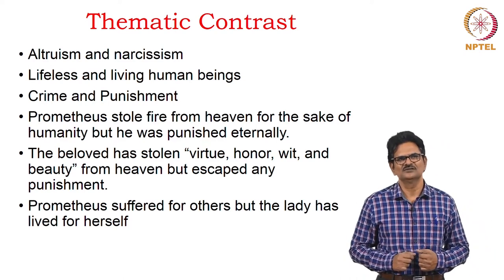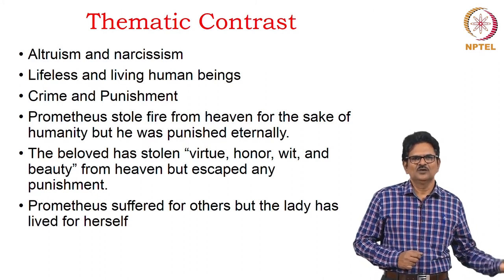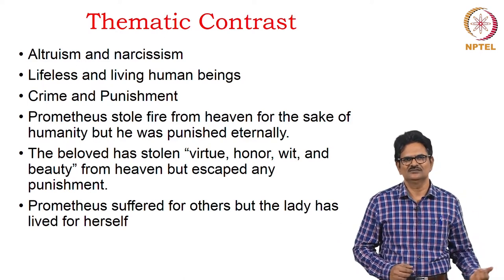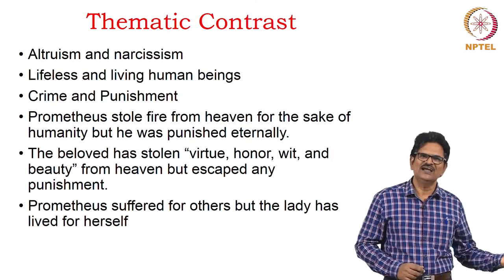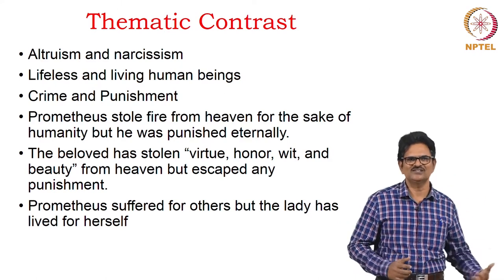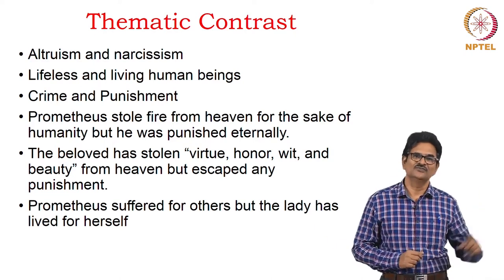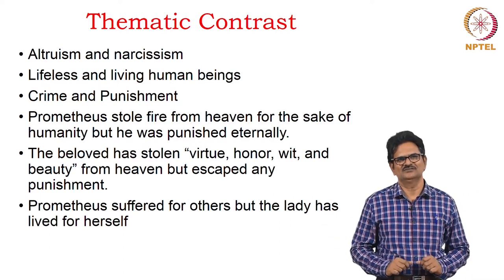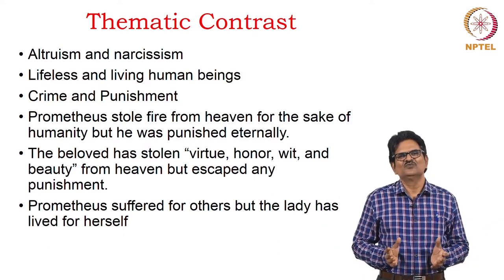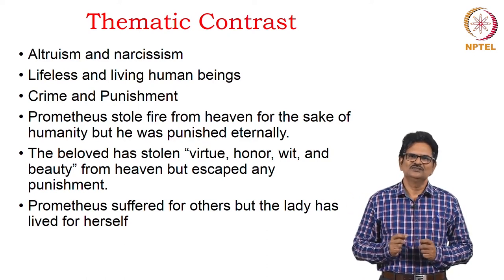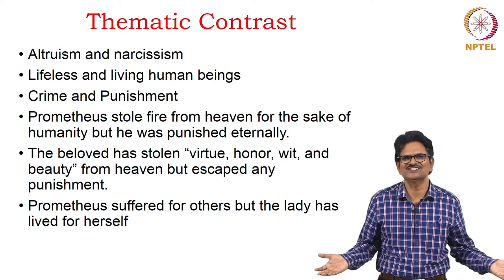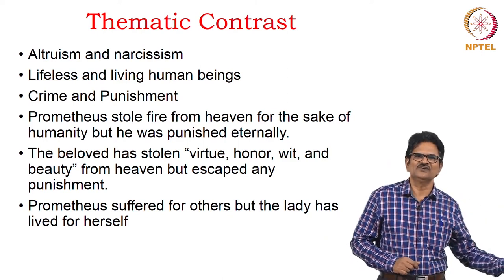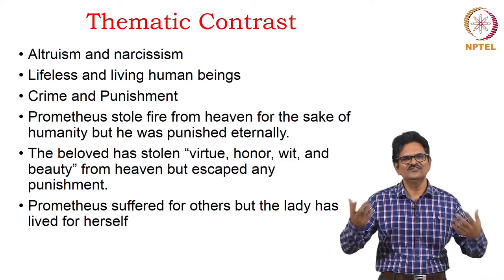There is an element of crime and punishment — if we steal something, we are punished, and so Prometheus was punished. Prometheus stole fire from heaven for the sake of humanity, but he was punished eternally. On the other hand, the beloved has stolen virtue, honour, wit, and beauty — many things, not just fire — from heaven, but escaped any kind of punishment. She has all these qualities: virtue, honour, wit, and beauty. The poet imagines she stole them from heaven yet is not punished. Prometheus suffered for others, but this lady has lived for herself.